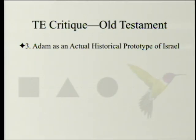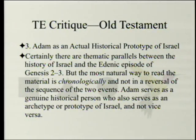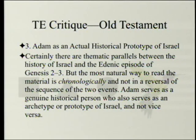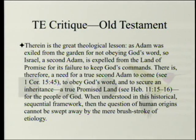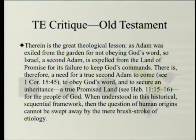Certainly there are thematic parallels between the history of Israel and the Edenic episode of Genesis 2-3, but the most natural way to read the material is chronologically, not in a reversal of the sequence of events. Adam serves as a genuine historical person who also serves as an archetype or prototype of Israel — not vice versa. As Adam was exiled from the garden for not obeying God's word, so Israel, a second Adam, is expelled from the land of promise for failure to keep God's commandments — history repeats itself, or at least echoes. There is therefore a need for a true second Adam to come, to obey God's word and secure an inheritance — a true promised land, echoed in Hebrews 11:15-16. When understood in this historical sequential framework, the question of human origins cannot be swept away by the mere brushstroke of etiology.